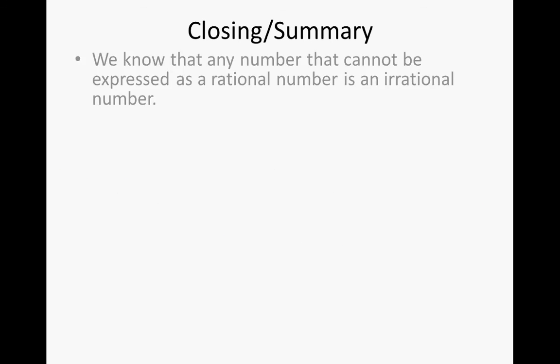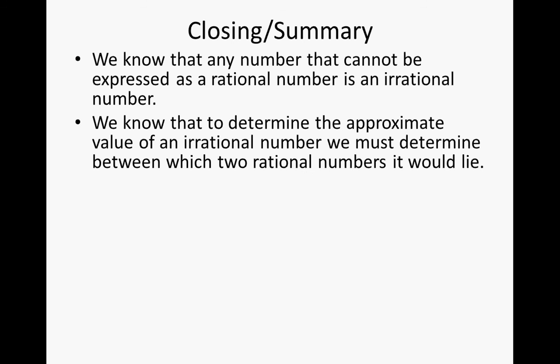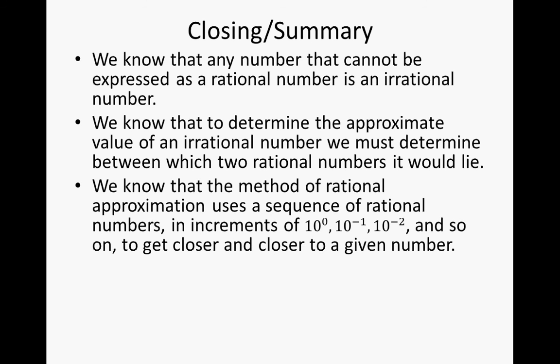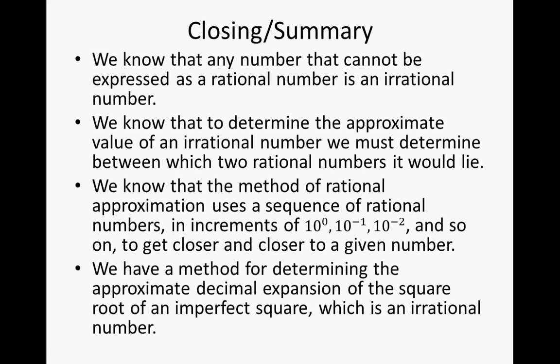Let's wrap this up. Any number that cannot be expressed as a rational number is an irrational number. To determine the approximate value of an irrational number, we must determine which two rational numbers it lies between. The method of rational approximation uses a sequence of rational numbers in increments of 10 to the 0, 10 to the negative 1st, 10 to the negative 2nd, and so on, to get closer and closer to the given number — giving us the approximate decimal expansion of the square root of an imperfect square. We'll see you in class.